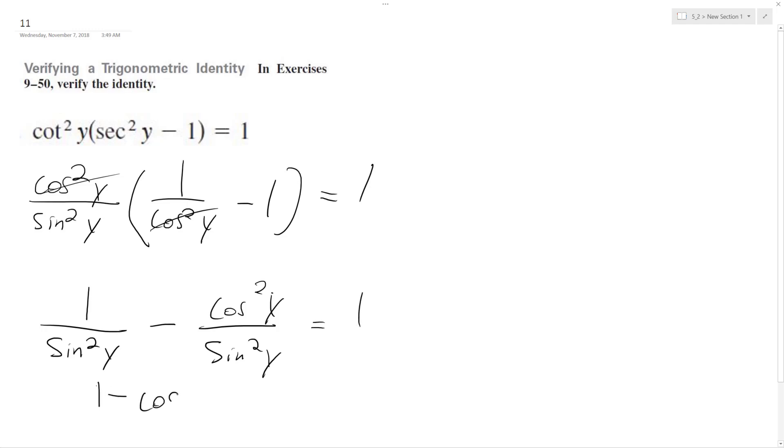This is the same thing as 1 minus cosine squared y over sine squared y. I'm going to move over here, and this is the trig identity, so sine squared y plus cosine squared y equals 1.